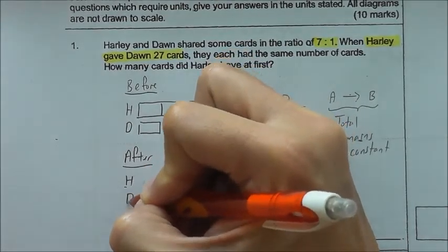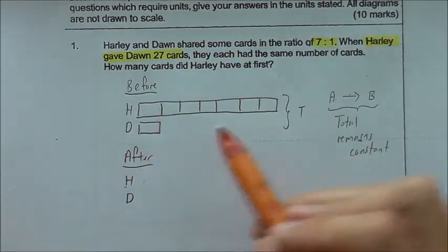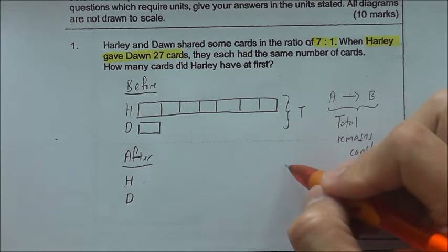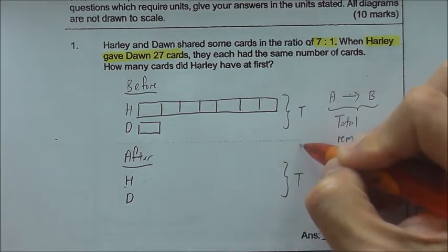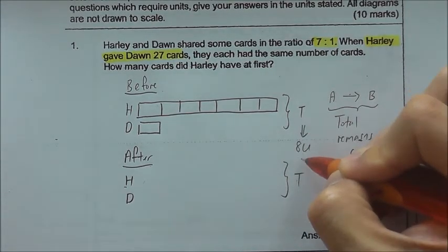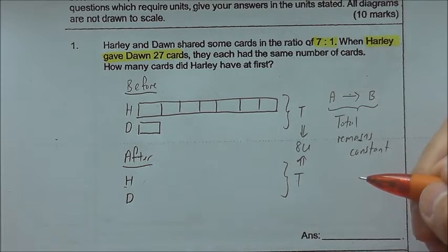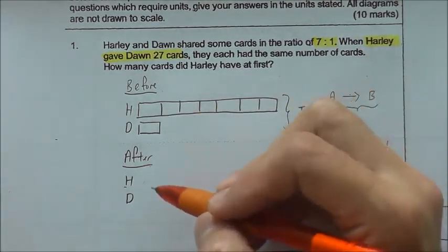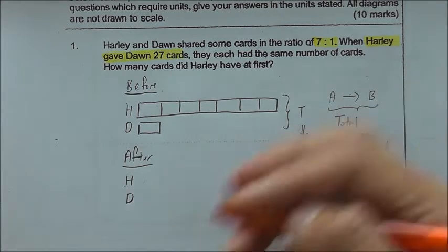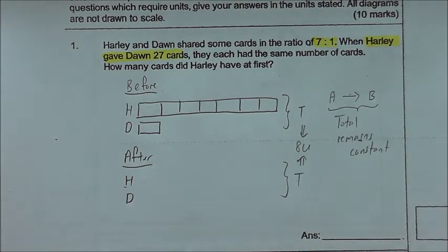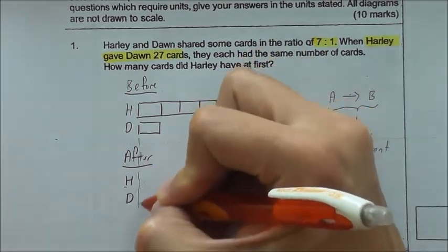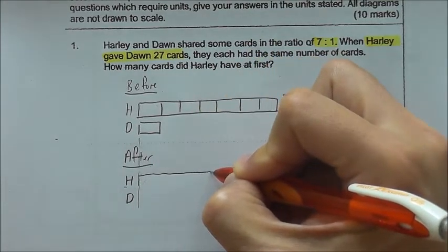So now Harley and Dawn, you can see that altogether they are 8 units. So at the end there must be also the same 8 units. So how do we divide 8 units such that they have an equal number of units? It has to be 8 divided by 2, each one 4. So I can just draw it this way.